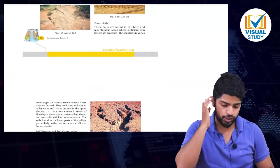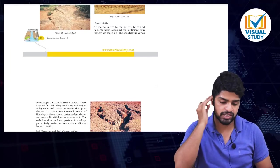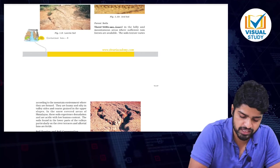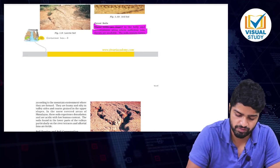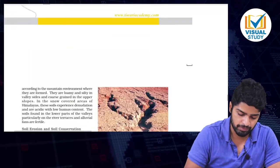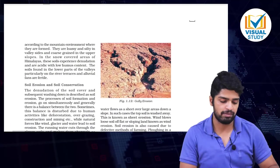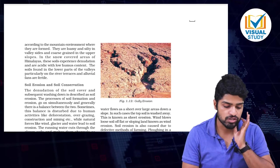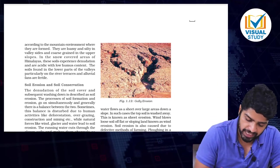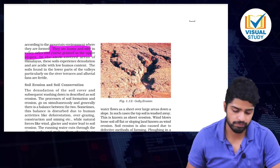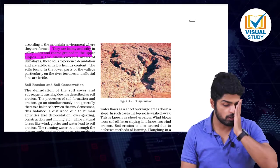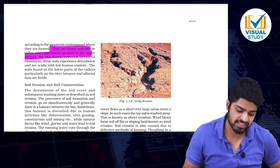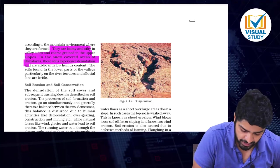Forest soils are found in hilly and mountainous areas where sufficient rainforests are available. These soils vary in texture according to the mountain environment where they are formed — they are loamy and silty in valley sites and coarse-grained in the upper parts. In snow-covered areas of the Himalayas, these soils experience denudation and are acidic with low humus content.